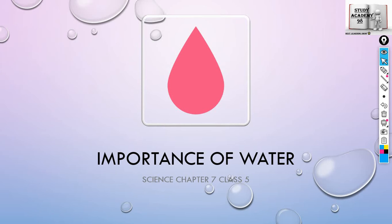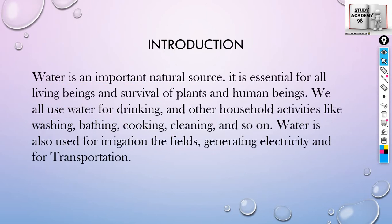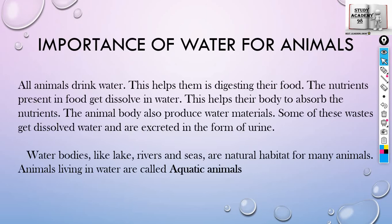Hello everyone, welcome back. We are doing Chapter 7, Importance of Water, for Class 5. We have seen the content, and we have done the importance of water for animals. Today we will do importance of water for plants. After that, we will do water availability in nature, including groundwater, ways of obtaining groundwater, groundwater and water supply. We have also done the introduction.